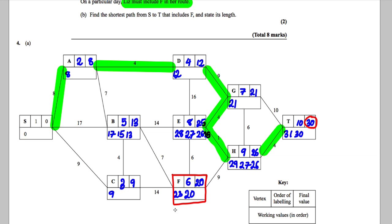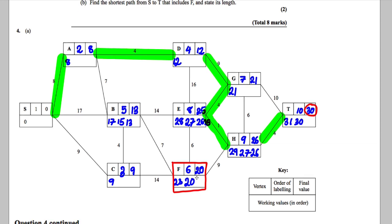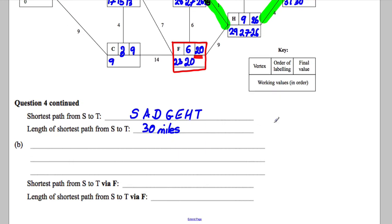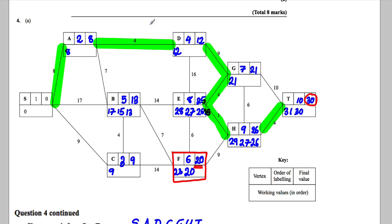Because Dijkstra, these numbers tell you how to get from S to here the quickest, this one here, 20, must be the quickest I can get to F in. So 20 must be the quickest I can get to F in. And what route must that be? Well, let's just see how we would get there in 20.